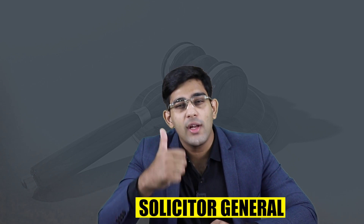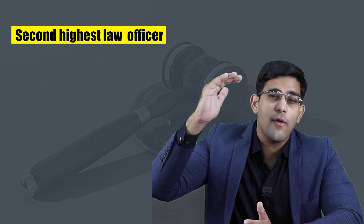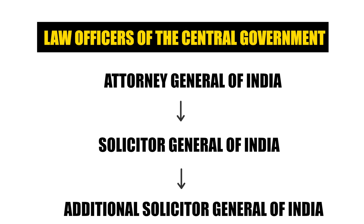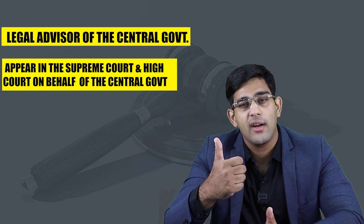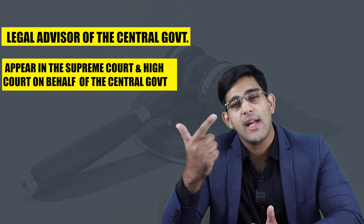Sixth term है — Solicitor General of India। ये statutory post है, सांविधानिक post नहीं है। Solicitor General जो है second highest law officer होते हैं India के। Top पे जो highest law officer है वो है Attorney General, फिर उनके नीचे होते हैं Solicitor General, और Solicitor General के नीचे होते हैं Additional Solicitor General। Current Solicitor General of India is Tushar Mehta। इनकी same duty होती है जैसे Attorney General की — they advise the Central Government and appear for the Central Government in High Courts and Supreme Court।